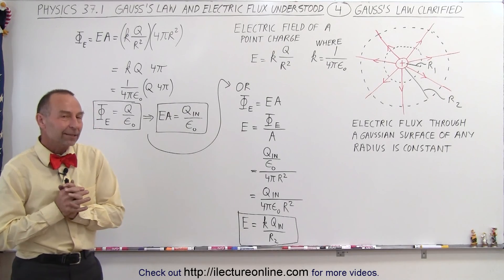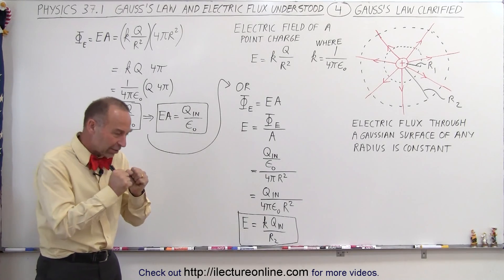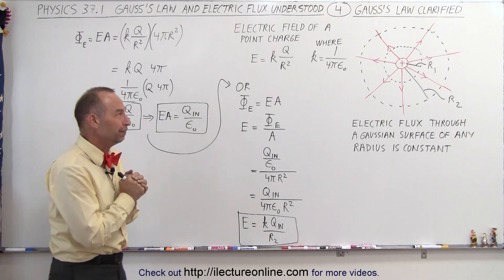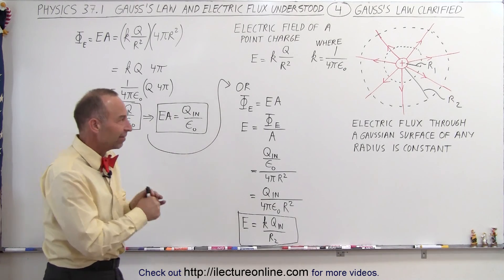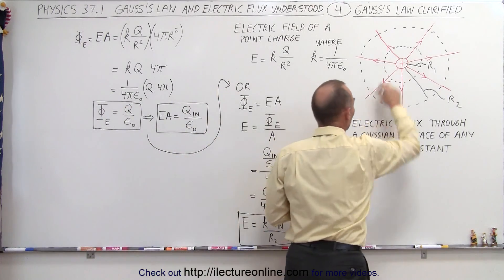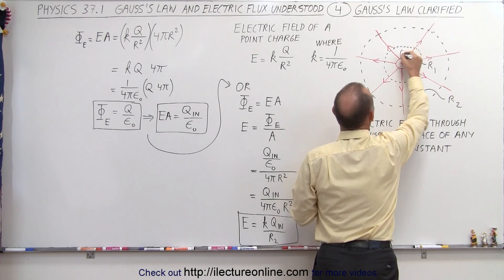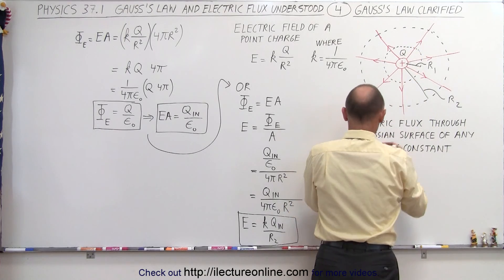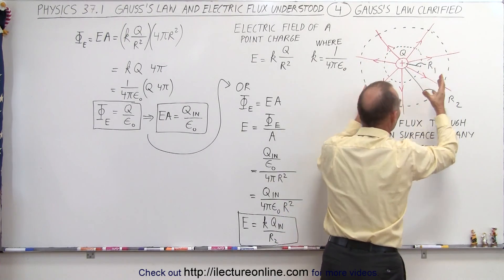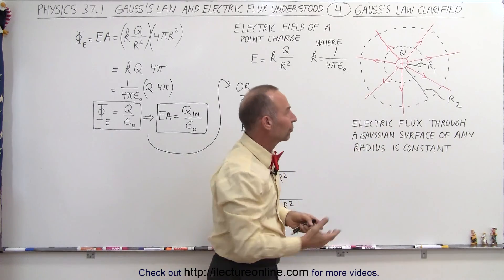Welcome to Electron Line. Let's try to understand Gauss's Law just a little bit better. Let's say that we have a small point charge called Q, and let's assume that we put some Gaussian surfaces around it of various radii.